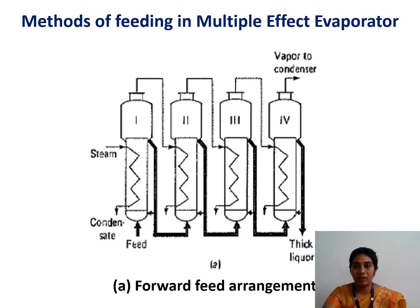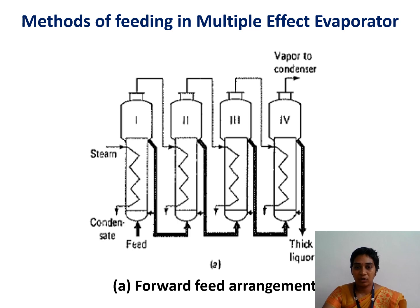Next, the methods of feeding the multiple effect evaporator: forward feed and backward feed. In forward feed, when we have more than two evaporators it is called a multiple effect evaporator, used to increase economy and reduce cost. The food juice enters the first evaporator and after evaporation moves to the second, then third, then fourth. The concentrated thick liquid is collected at the fourth evaporator. Only at the first evaporator is steam used; the vapor produced from the first evaporator is used as the heating medium for all subsequent evaporators.